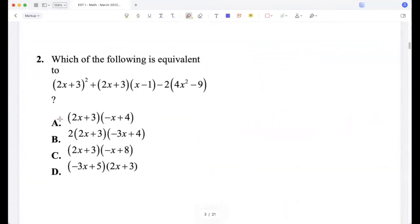Which of the following is equivalent to (2x + 3)² + (2x + 3)(x - 1) - 2(4x² - 9)? Okay, so this can be written as (2x + 3)(2x - 3) because a² minus b². And now from this, this, and this, I can take 2x plus 3 common.